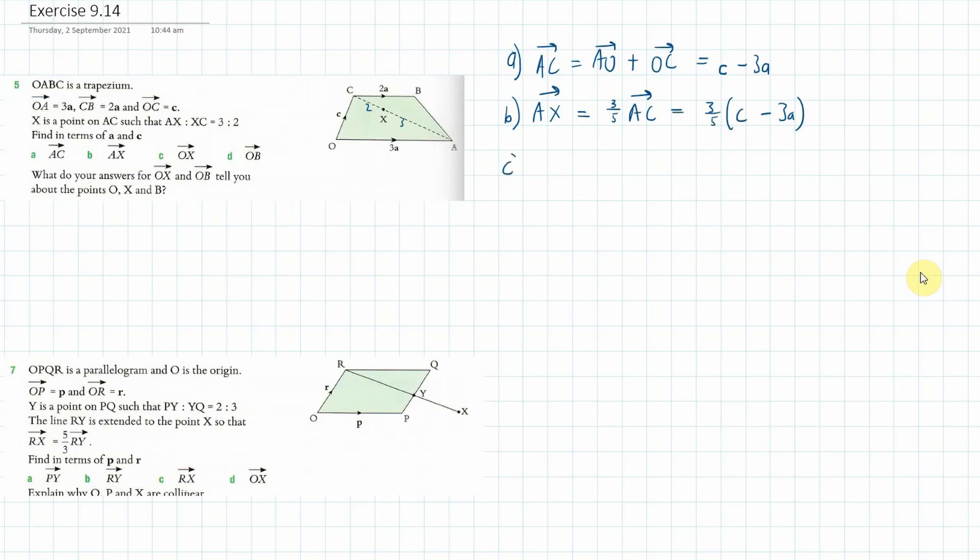Now C, we're trying to find OX. Now what is OX? Now to get to O, we can go from O to A, plus A to X. Now O to A is 3A. And then we're going to go plus 3 fifths C minus 3A.